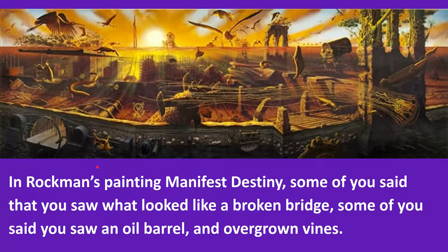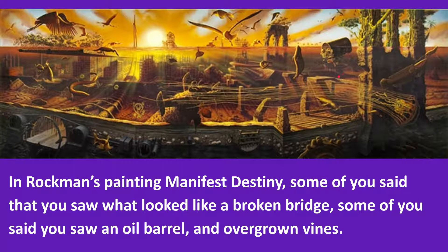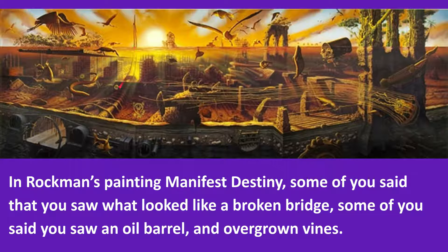For example, in Rockman's painting 'Manifest Destiny,' some of you said that you saw what looked like a broken bridge. Some of you mentioned an oil barrel, and other people mentioned the overgrown vines, a jellyfish, or a weird bridge structure that kind of goes underwater and then comes out of the water on the other side.